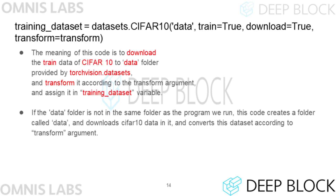Let's take a look at the code that loads the dataset. First, let's check the code that prepares the training data. This code means that a folder called data is created in the location where the code file is executed, and CIFAR-10 training data is downloaded into that folder. The downloaded data is loaded and returned based on the Compose instance entered in the transform parameter.